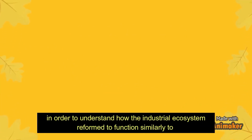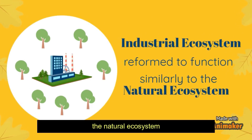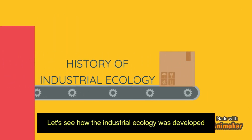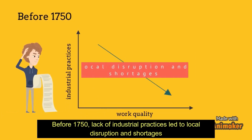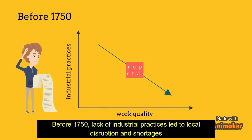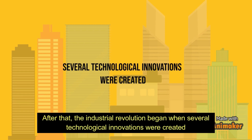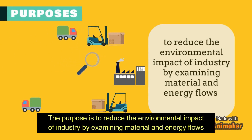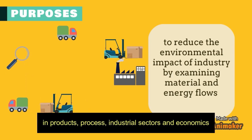In order to understand how the industrial ecosystem reforms to function similarly to the natural ecosystem. Let's see how industrial ecology was developed. Before the 1950s, lack of industrial practices led to local disruption and shortages. After that, the industrial revolution began when several technological innovations were created. The purpose is to reduce the environmental impact of industry by examining material and energy flows in products, processes, industrial sectors, and economics.